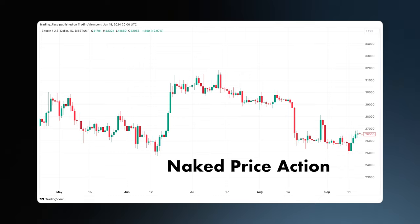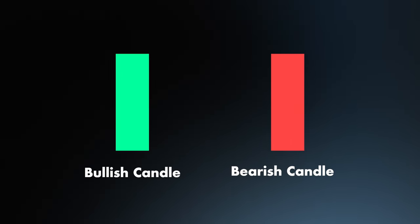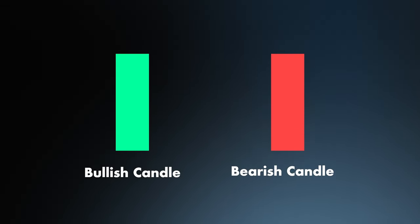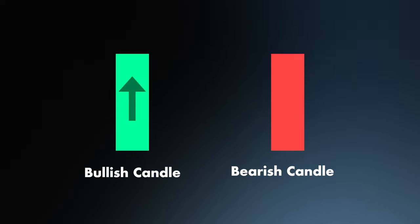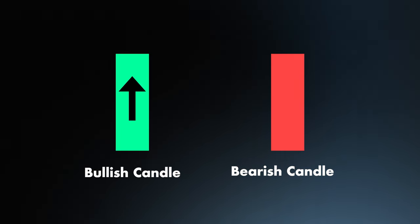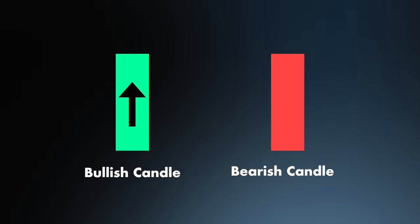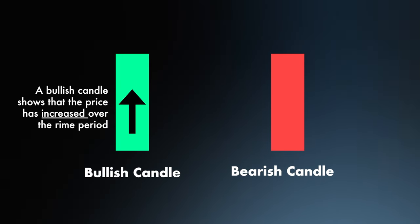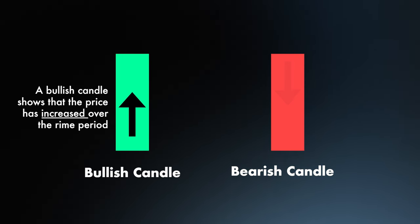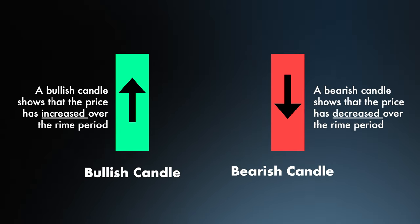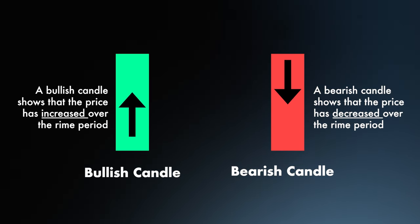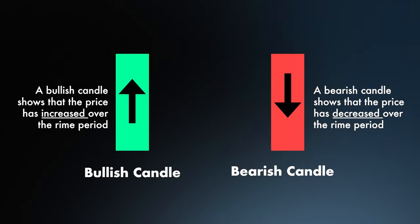As you can see, the chart is made up of lots of individual candlesticks. Candles tend to be either bullish or bearish. On the left here we have a green candle, which represents a bullish candle. Bullish simply means that the price increased over the time period. On the right, the red candle is bearish, which simply means that the price decreased over the period.